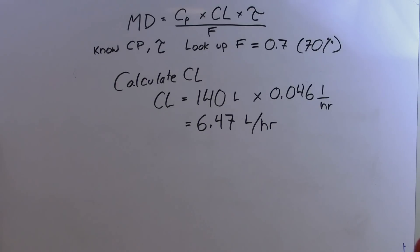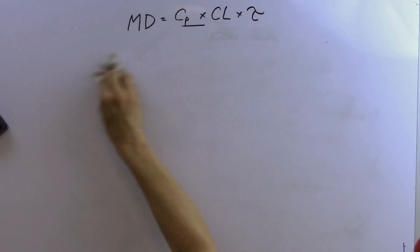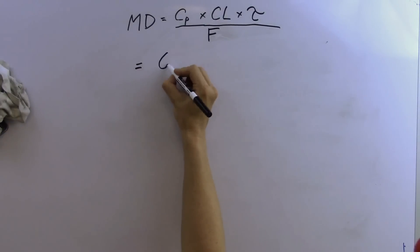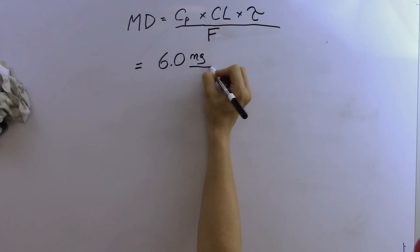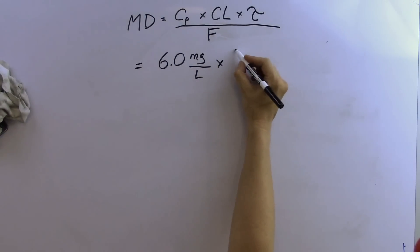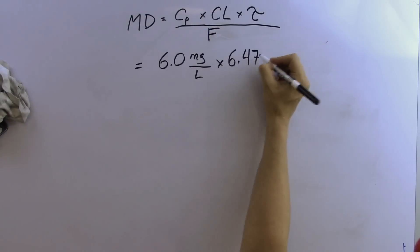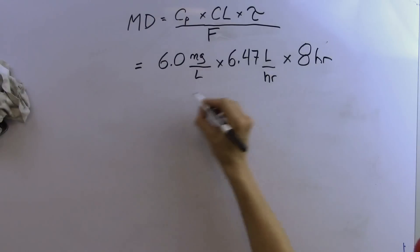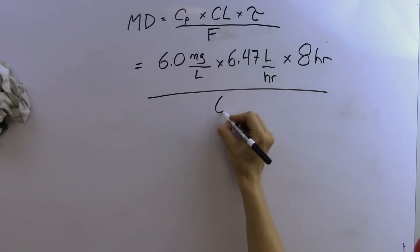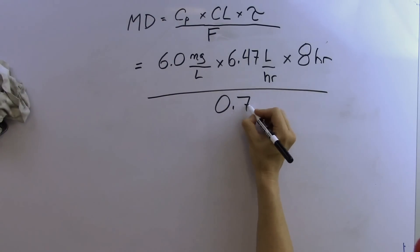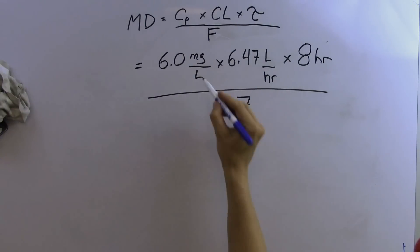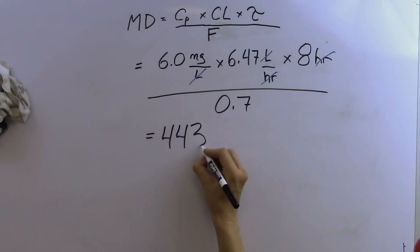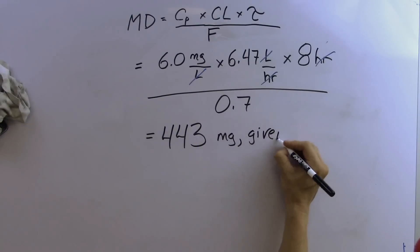Now let's plug back into our maintenance dose equation. Our target plasma concentration is 6.0 milligrams per liter, clearance is 6.47 liters per hour, dosing interval is 8 hours, and oral bioavailability is 0.7. Cancelling units, we end up with 443 milligrams as the dose to be given three times a day.